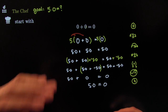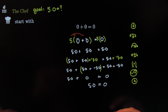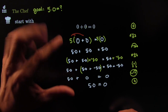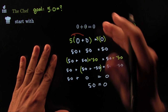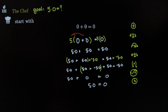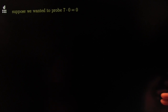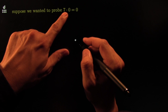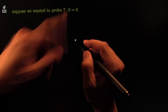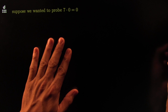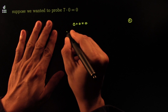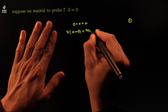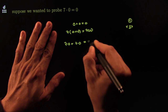Beautiful, perfect, flawless reasoning — perfection, beauty, and creativity. That's what mathematicians do. That is a proof of why five times zero equals zero. Now, what about seven times zero? We can play exactly the same game: zero plus zero equals zero by additive identity; slap a seven on both sides by the cancellation law of multiplication; distribute to get seven times zero plus seven times zero equals seven times zero by the distributive law.